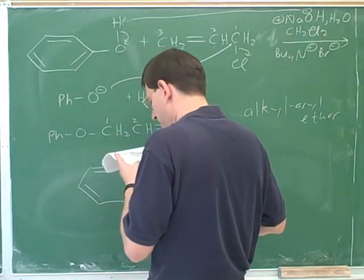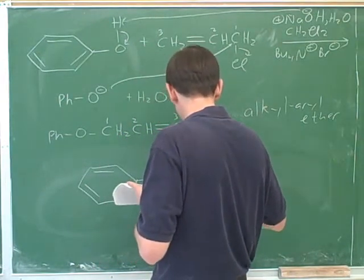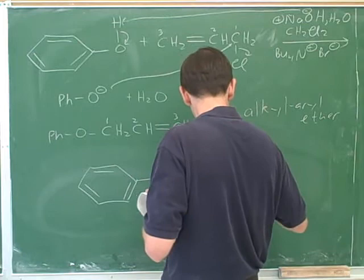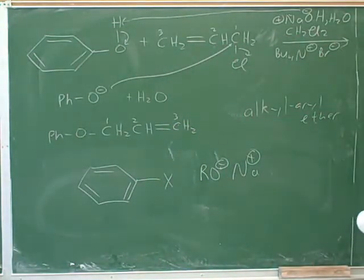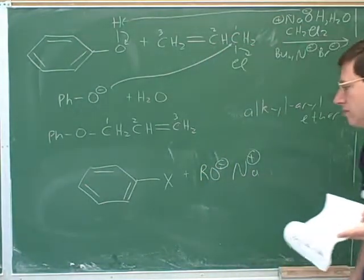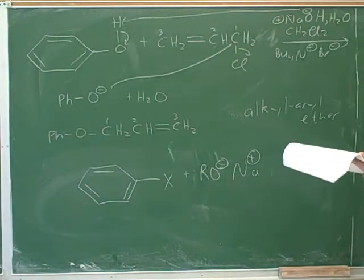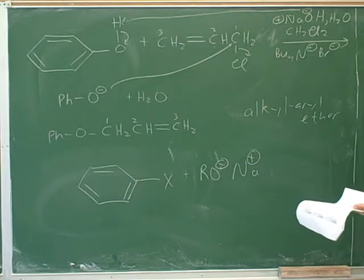Let me show you a way of making alkyl aryl ethers that doesn't work. This method doesn't work. This method doesn't work. What's the X halogen? Yeah.